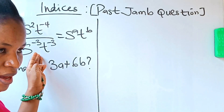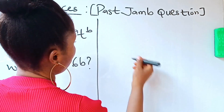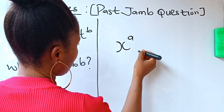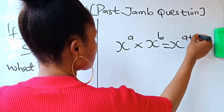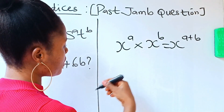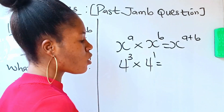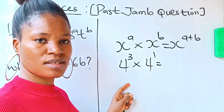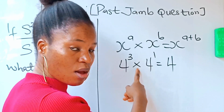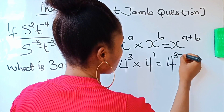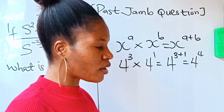What laws of indices do we apply here? First, the multiplication law. It states that x raised to the power of a, multiplied by x raised to the power of b, equals x raised to the power of a plus b. For example, 4 raised to the power of 3 times 4 raised to the power of 1 — you pick one base and add the powers: 3 plus 1, giving 4 raised to the power of 4.